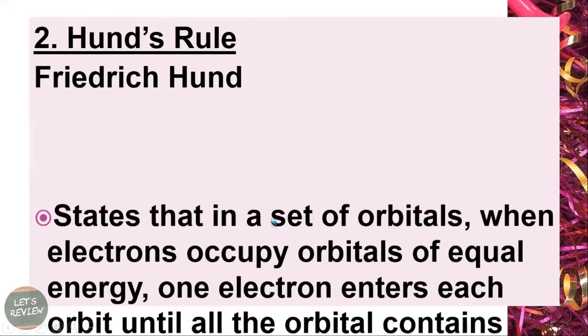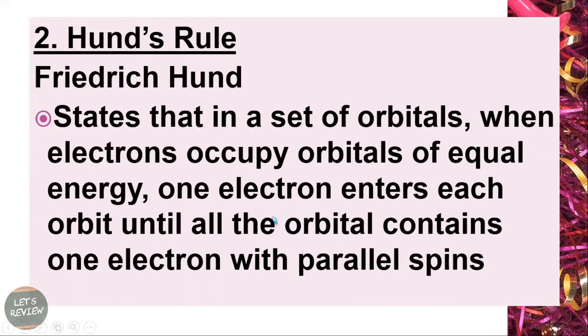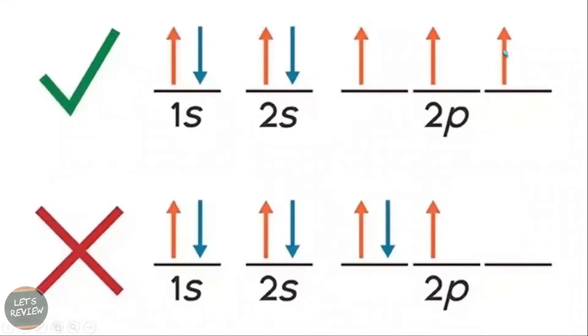Next rule is called Hund's rule, by Friedrich Hund. It states that in a set of orbitals, when electrons occupy orbitals of equal energy, one electron enters each orbital until all the orbitals contain one electron with parallel spins. If you see here, this arrow represents the spins. So in Hund's rule, it's said that if this will be the orbitals, then it should be occupied with the electrons with the same spin.